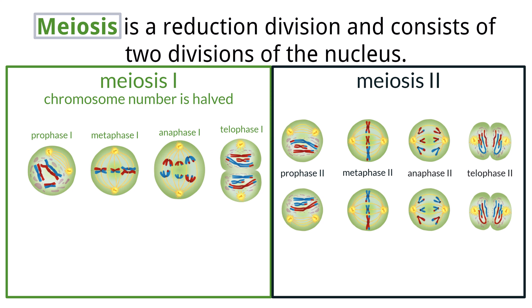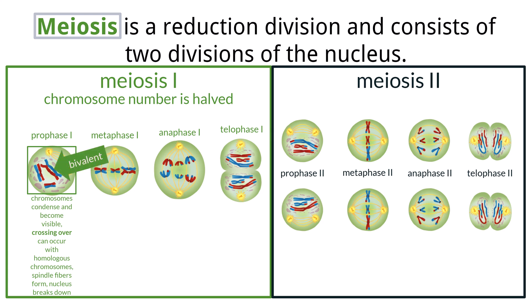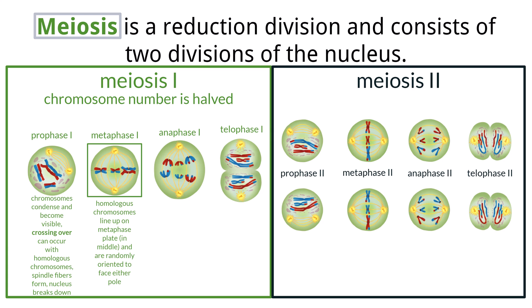Many of the processes that happen in meiosis may sound similar to mitosis. In prophase I, chromosomes become visible and more compact. Homologous chromosomes are attached to each other and undergo crossing over. Crossing over only occurs in prophase I, and parts of the homologous pairs can be exchanged. The homologous chromosomes together are called a bivalent. Spindle fibers begin to form and the nuclear membrane begins to disappear, as does the nucleolus. In metaphase I, the homologous chromosomes line up on the metaphase plate and they are randomly oriented, meaning either chromosome from the pair is equally likely to be pulled to either pole.